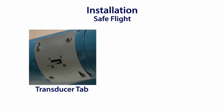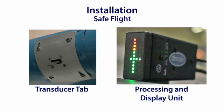The Safe Flight device utilizes a two-part system. There is a transducer tab installed on the leading edge of the wing, and a processing and display unit placed in the cockpit in view of the pilot. The transducer tab needs to be positioned on the leading edge of the wing and requires a hole cut in the wing. This becomes difficult, but not impossible, on composite aircraft.